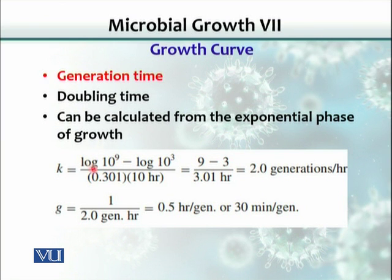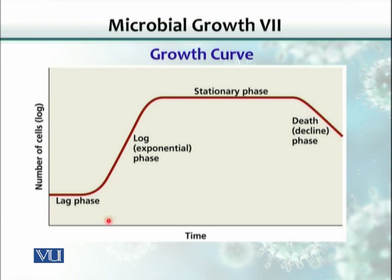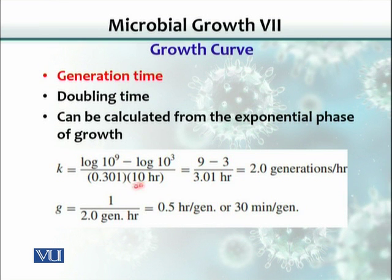The formula for generation time uses the final number of organisms and the initial number. We take the log of the final number minus the log of the initial number, divided by the log of two — since binary fission creates two organisms. We divide by the total time elapsed between the two points. In this example, with a time span of 10 hours, the result is two generations per hour, meaning one generation is completed in 30 minutes.